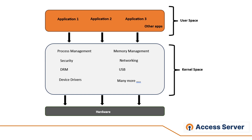The kernel is the essential center of the computer's operating system — the core that provides basic services for all other parts of the operating system. Handling of network packets happens mainly in the kernel, and the data is handed over to user space programs like your web browser, email client, and so on.